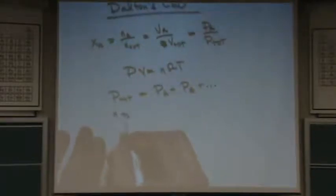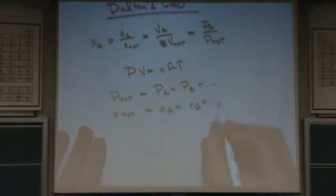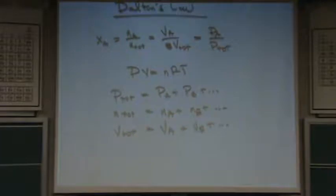Same for the total moles is NA plus NB plus all the rest. And the V total equals the sum of the volumes. Okay, so those are the formulas you're going to use.